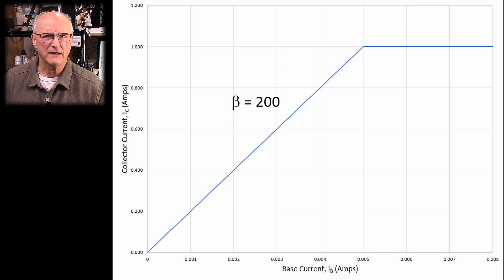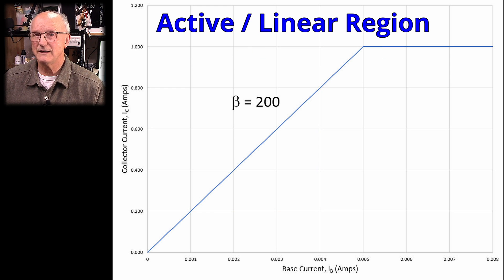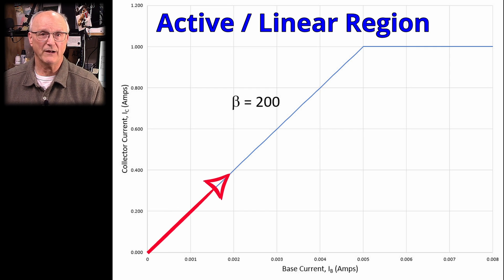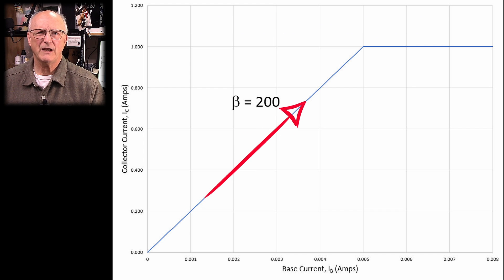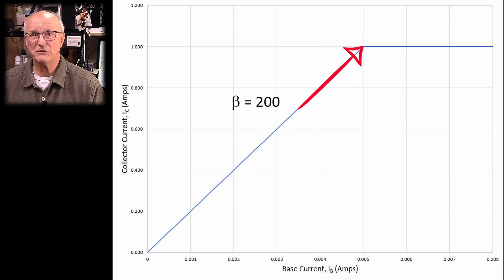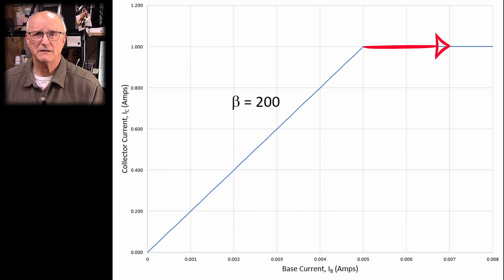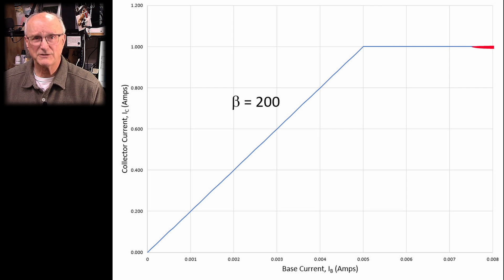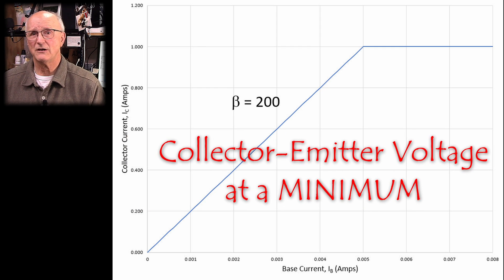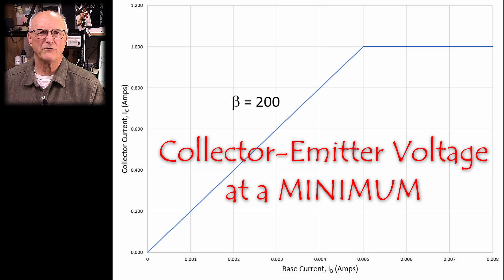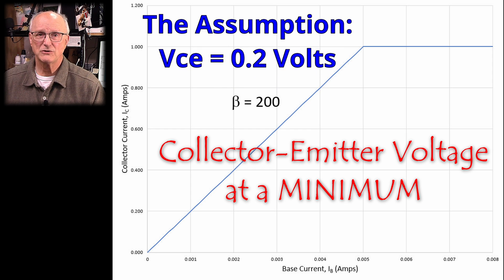This is our second operating mode — the active or linear region of operation, and this is where we want to live for linear amplifiers. Eventually we come to a place where the collector current can't increase any further. The collector voltage drops below the base voltage, and it doesn't matter what the base current is. The collector current has reached its maximum and it isn't budging. At this point the collector-emitter voltage is at its minimum, and we generally assume for this model that this is 0.2 volts.